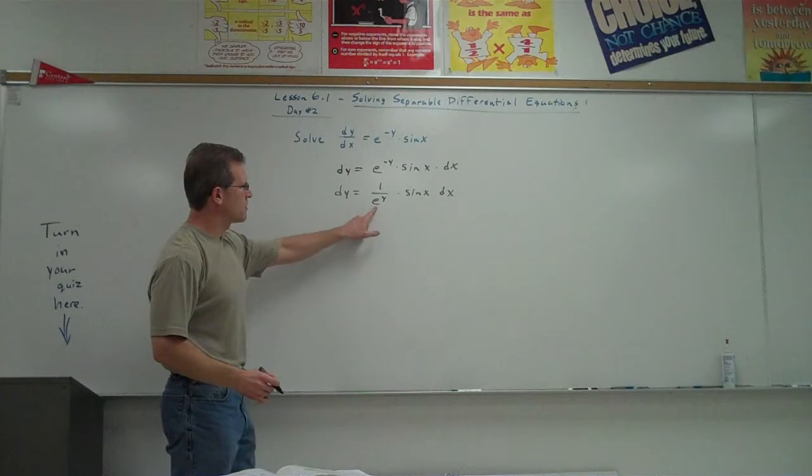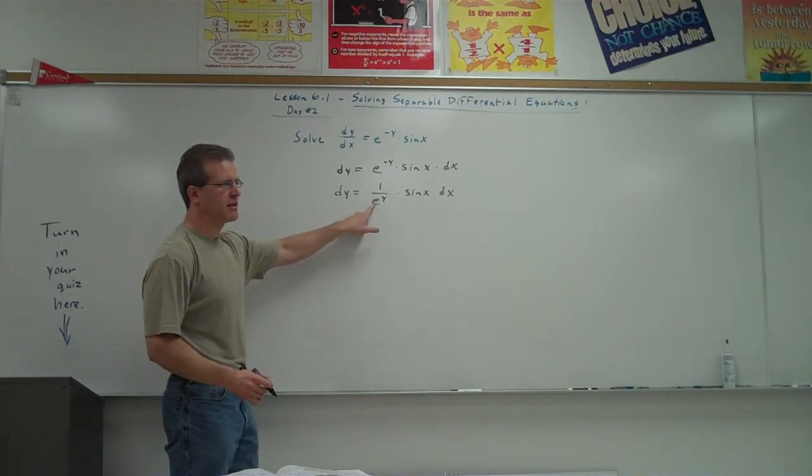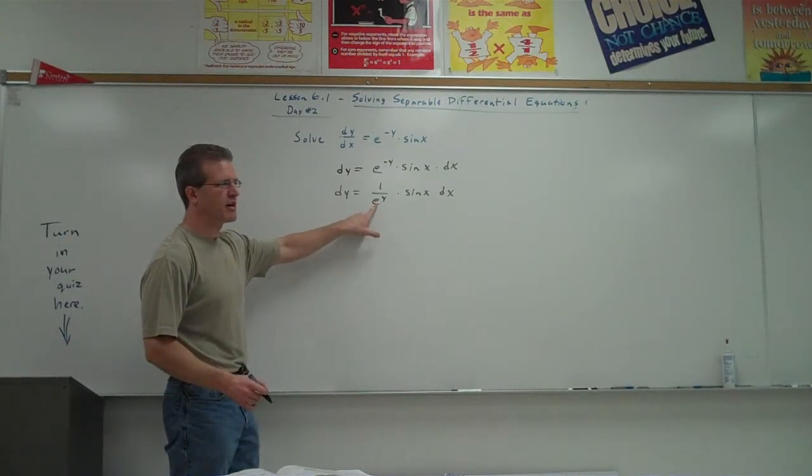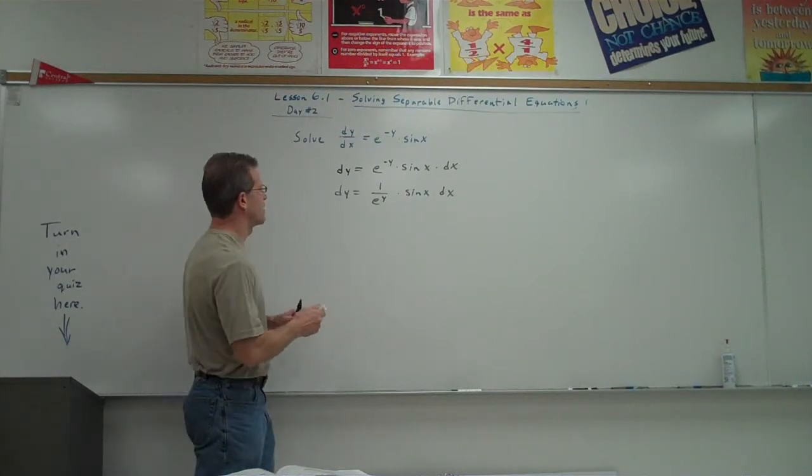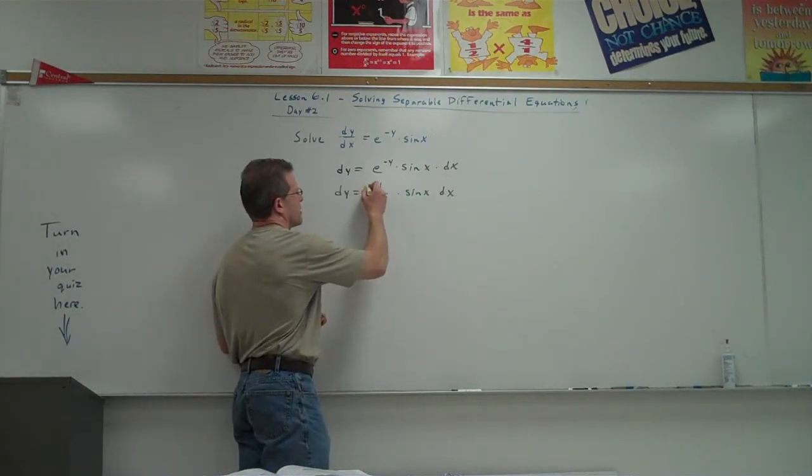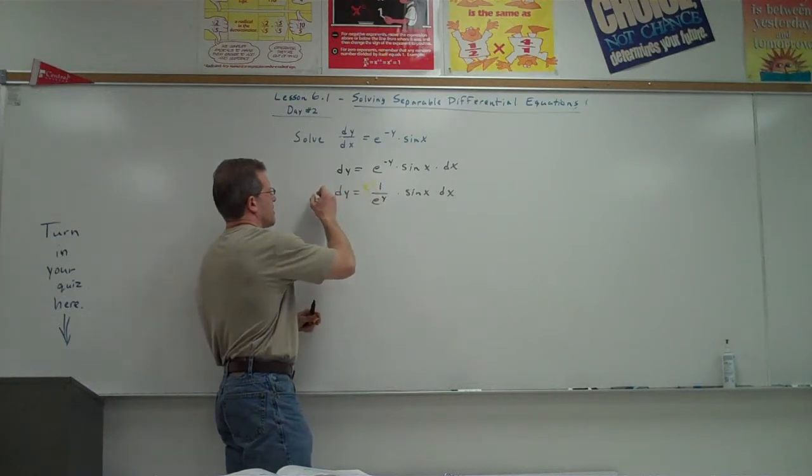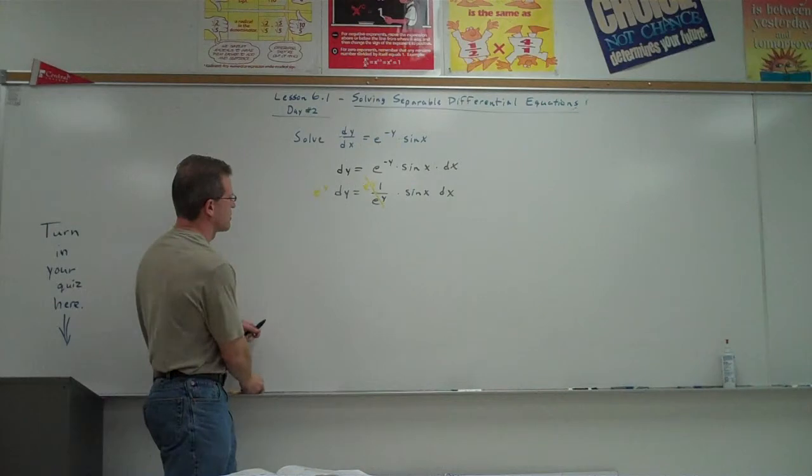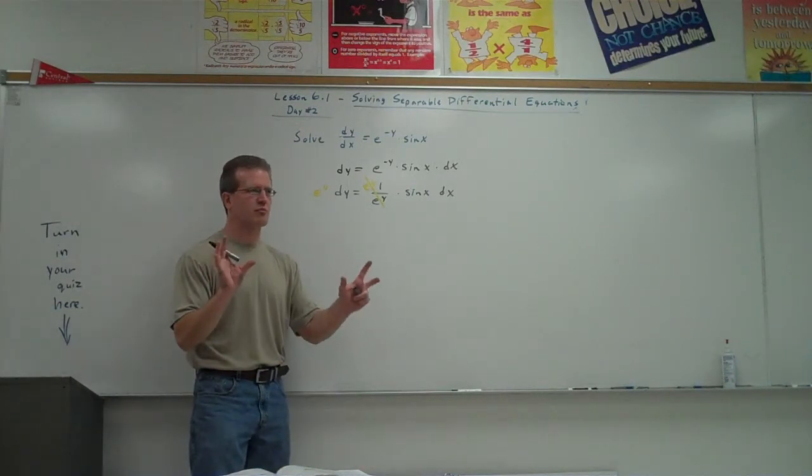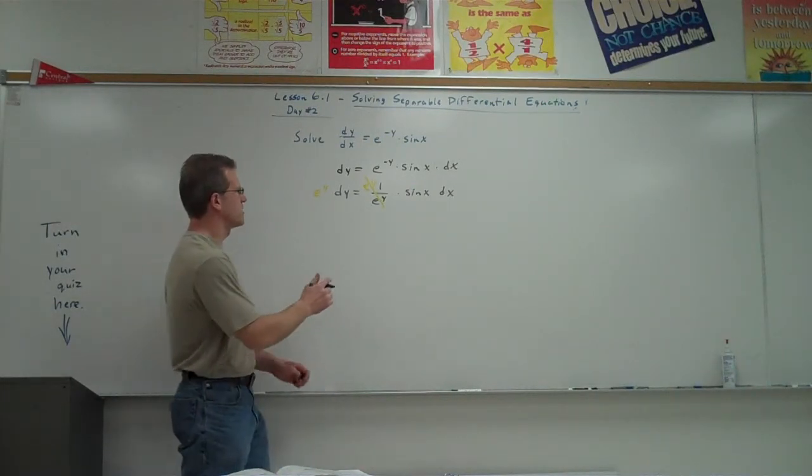I'd like to get the y's on the left. I don't want having this e to the y on the right. How could I get rid of that e to the y on the right and have it appear over here? Times. Right. Times by e to the y on both sides. So times by e to the y here and here. These would cancel. So that's my first goal.